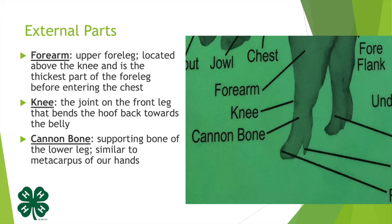The knee is the joint on the front leg that bends the hoof backwards towards the belly. The cannon bone is the supporting bone of the lower leg, similar to the metacarpus of our hands — kind of like our wrist — that is able to bend back and forth, which allows the hoof to move a little more.